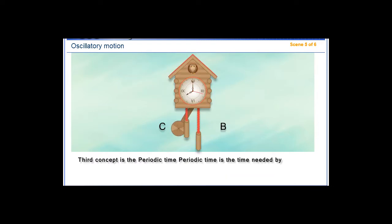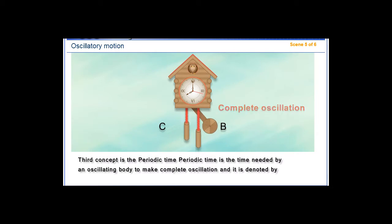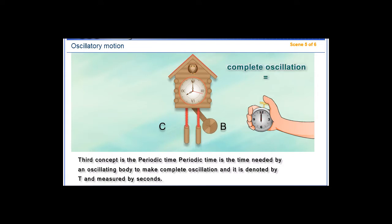Third concept is the periodic time. Periodic time is the time needed by an oscillating body to make complete oscillation, and it is denoted by t and measured in seconds.